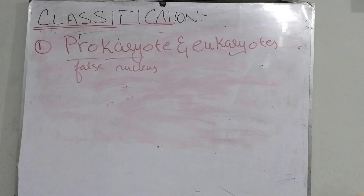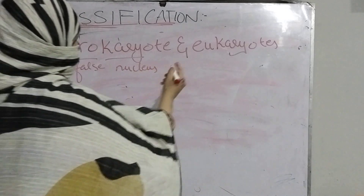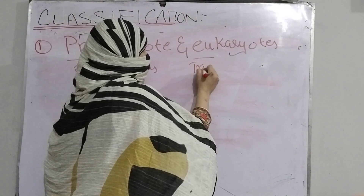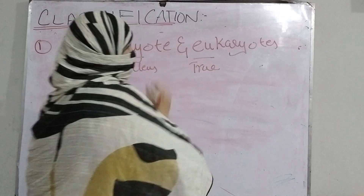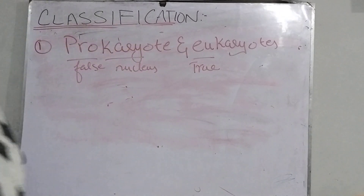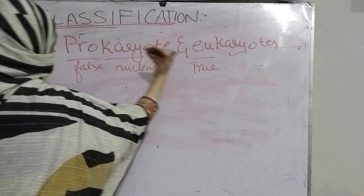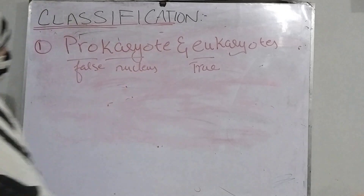Eu means true, so eukaryotes have a true membrane-bounded nucleus and other membrane-bounded organelles. So eukaryotes can be complex cells.